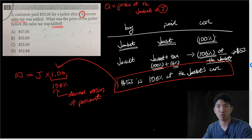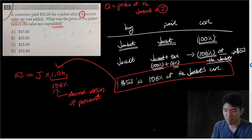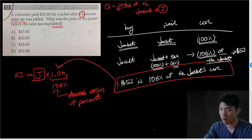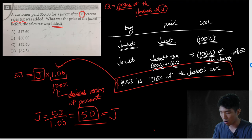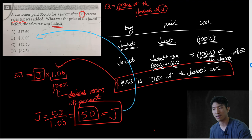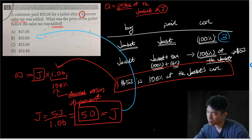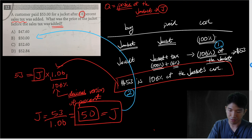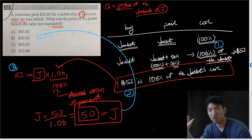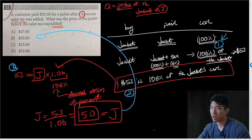By finding a percent of something you multiply by the decimal version. So dividing to isolate J, we get J = 50. That's the cost of the jacket — our answer is $50. The most important thing to understand is how we got to 106%: 100% for the jacket itself plus 6% tax on top of it. Then coming up with that phrase, and converting it to an equation — those are the three key steps.